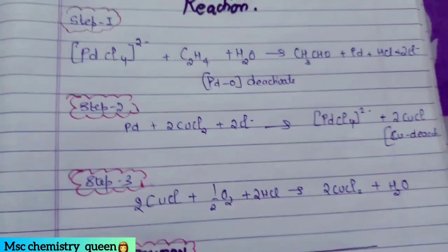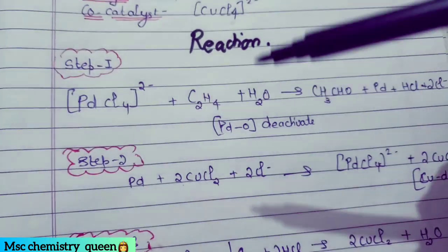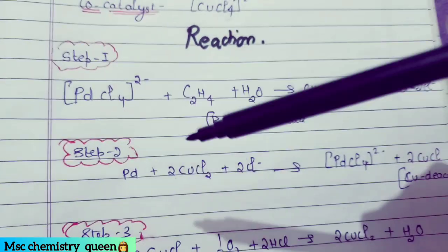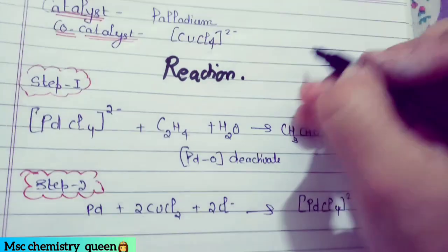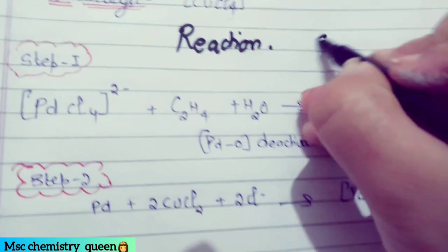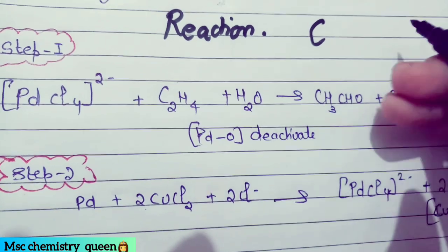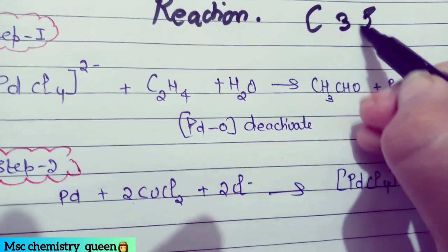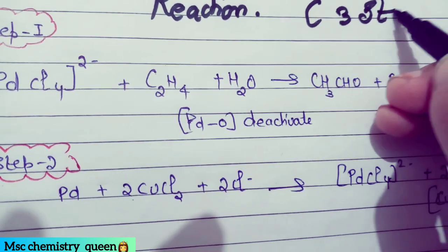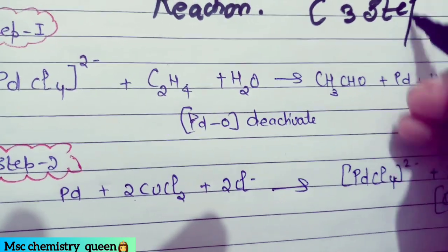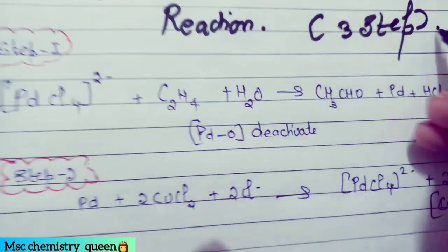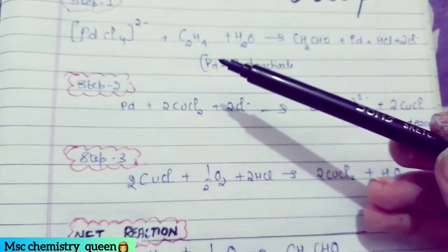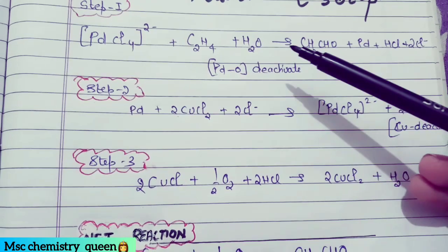This is why this is a 3-step reaction. First, you can see palladium chloride: when we add C₂H₄ and water, we get CH₃CHO (acetaldehyde), and palladium metal (Pd⁰) comes out along with HCl and chloride.